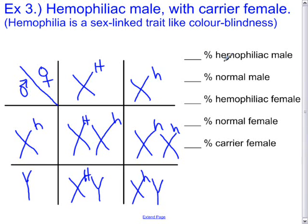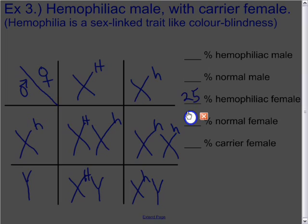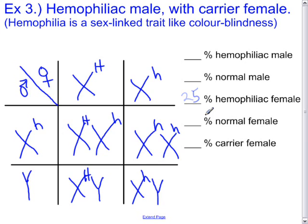Filling in the percents: hemophiliac males — 1 out of 4, so 25%; normal males — 1 out of 4, so 25%; normal females — 0%, they were all either carriers or hemophiliac; carrier females — 25%; and hemophiliac females — 25%. That is the end of the review video on sex determination and traits.